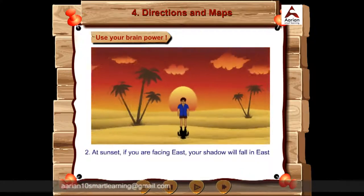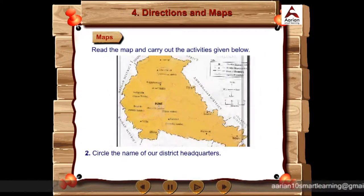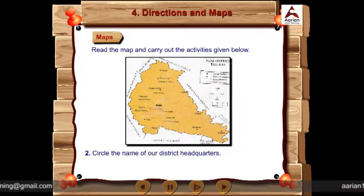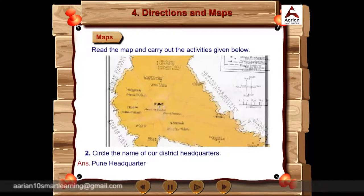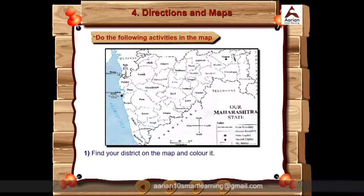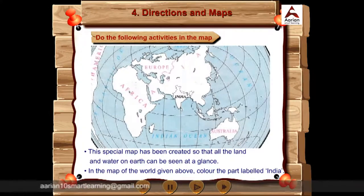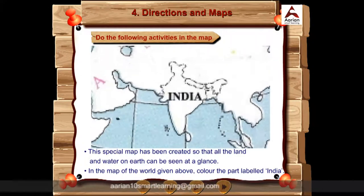At sunset, if you are facing east, your shadow will fall in the east direction. Second, circle the name of our district headquarters. Answer is Pune Headquarters. First, find your district on the map and color it. Answer, Pune District. In the map of the world given above, color the part labeled India.